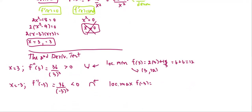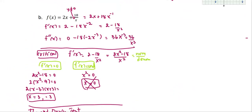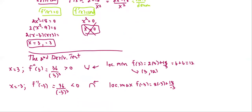And the other point, f at negative 3: 2 times negative 3 plus 18 over negative 3, following the function form, gives us negative 6 minus 6, or negative 12. Therefore, the local maximum point is negative 3 comma negative 12.